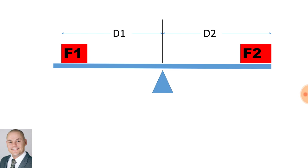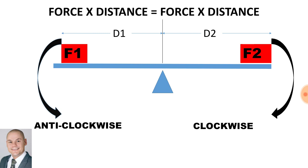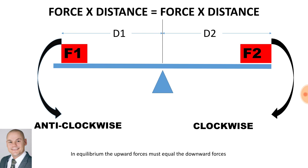Here we have a one-fulcrum beam, and we did an example in the previous video. It consists of an anti-clockwise force and a clockwise force. To calculate the moment, it will be force multiplied by distance. A moment is the turning effect of a force, measured in Newton meters. In equilibrium, the upward forces must be equal to the downward forces, and the anti-clockwise moments should be equal to the clockwise moments.